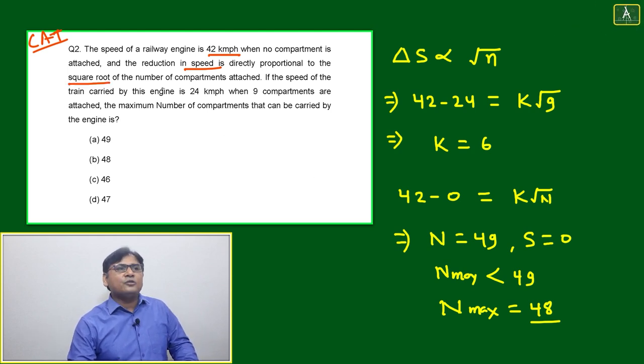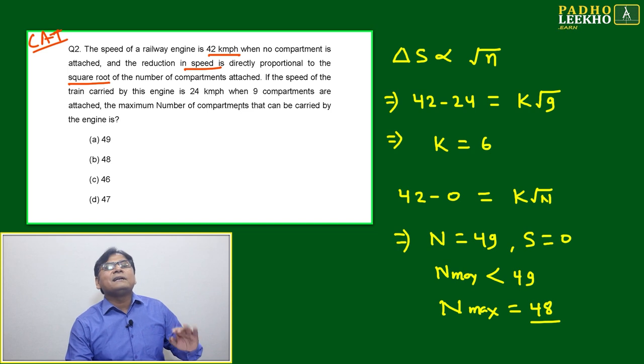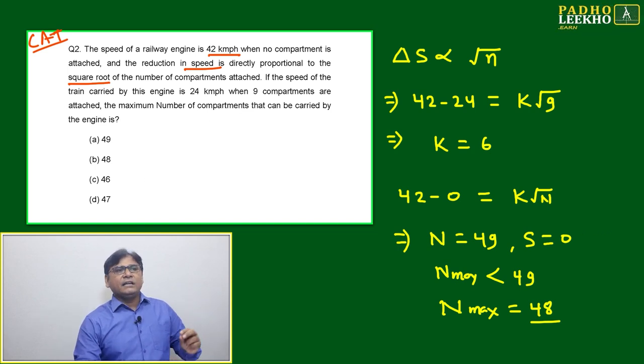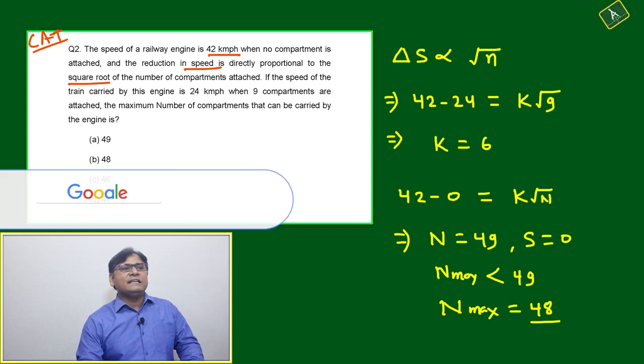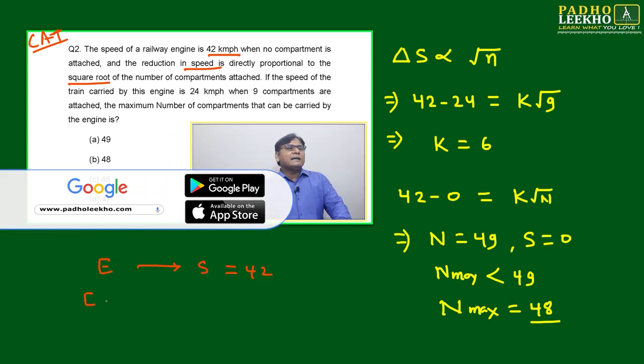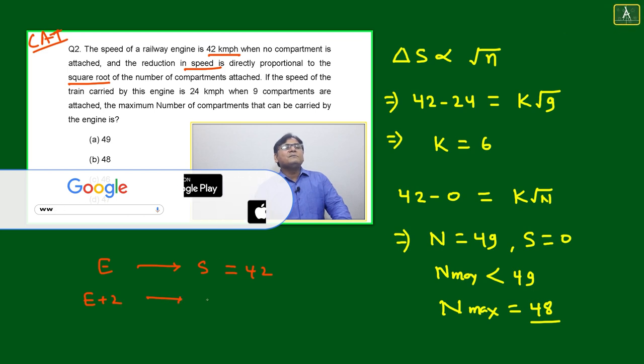Then the next part is telling that the reduction in the speed, whatever the speed is falling down, is directly proportional to the square root of the number of compartments attached.